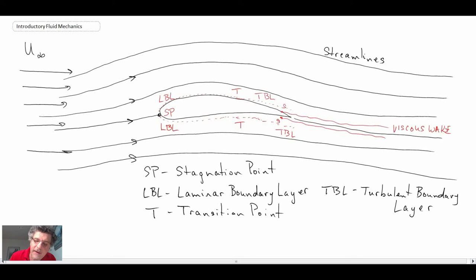And then finally, what we have in the very back side of the airfoil is S, and that would be the separation point, where the flow could separate from the airfoil, and then you have a viscous wake region behind.